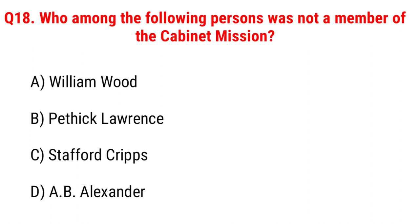Next question: who among the following persons was not a member of the Cabinet Mission? Option A, William Ode; B, Pethick Lawrence; C, Stafford Cripps; D, A.V. Alexander. The right answer is Option A, William Ode.